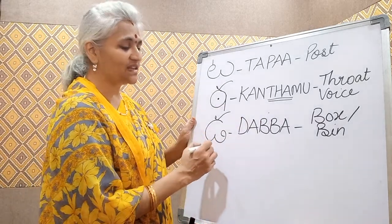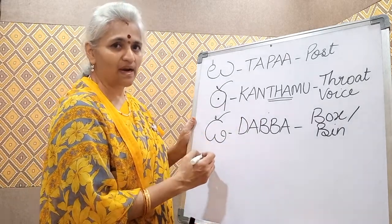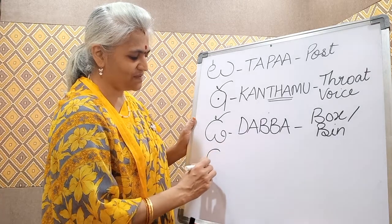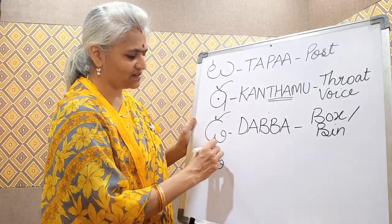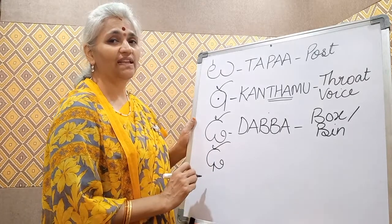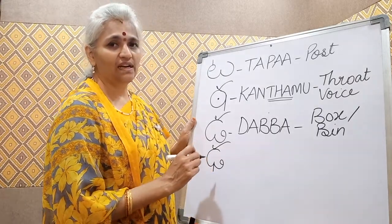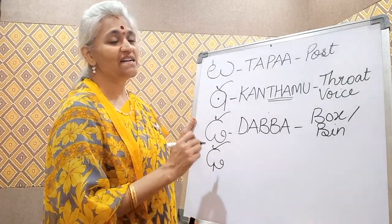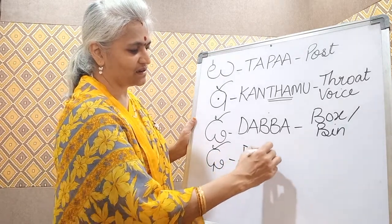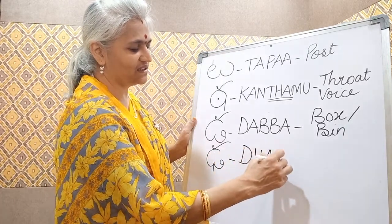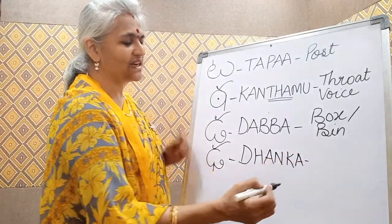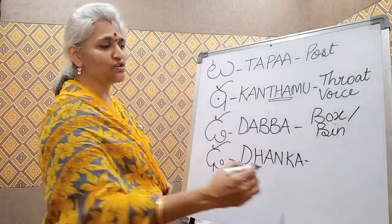The next one is the Maha-Pranam DA. The same DA shape is written with a standing line in the middle — that is DHA. An example word is DHANKA. DABBA — DHANKA is a drum, a big drum.